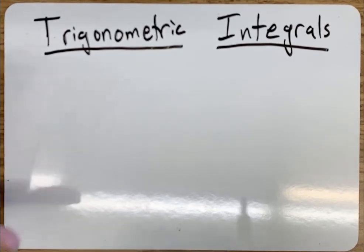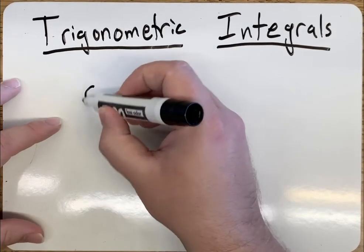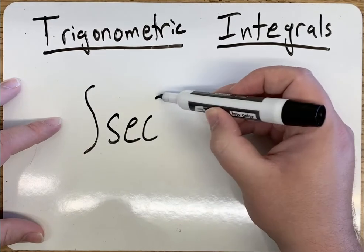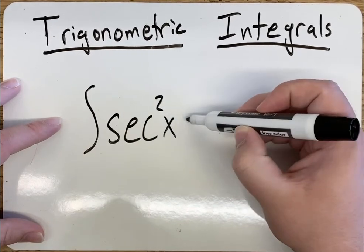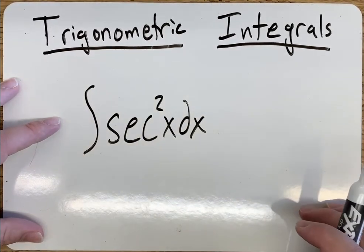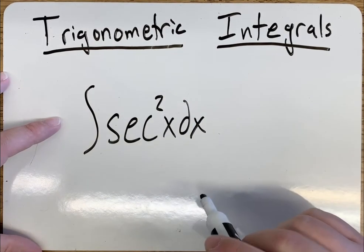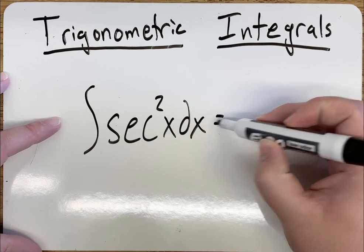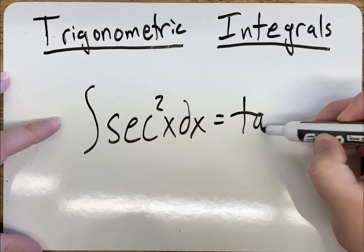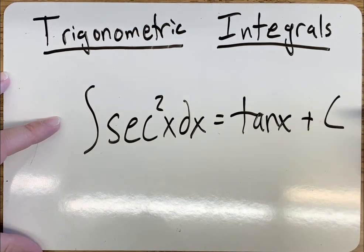All right, next one we're going to go with is the integral of secant squared x dx. Now remember from derivatives, the derivative that gets us this is tan x, so the antiderivative of secant squared x is going to be tan x plus c.